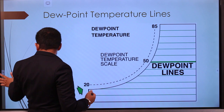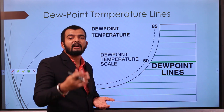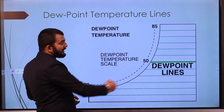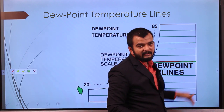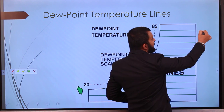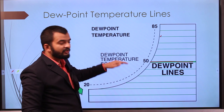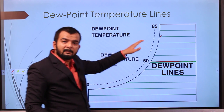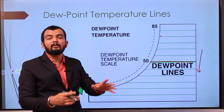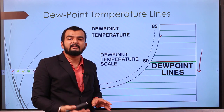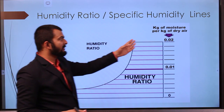Dew point temperature lines are horizontal lines parallel to the x-axis. As specific humidity increases (moving up on the y-axis), the dew point temperature also increases — meaning if humidity is higher, moisture starts to condense at a comparatively higher temperature. If specific humidity decreases, you need to reduce the air temperature further to condense the moisture.